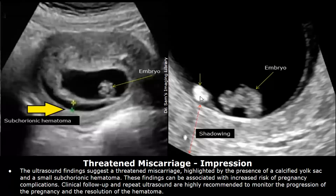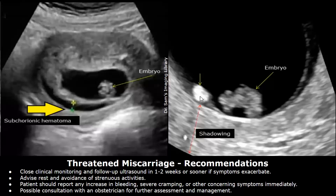This is the impression: the ultrasound findings suggest a threatened miscarriage, highlighted by the presence of a calcified yolk sac and a small subchorionic hematoma. These findings can be associated with increased risk of pregnancy complications; clinical follow-up and repeat ultrasound are highly recommended to monitor the progression of the pregnancy and the resolution of the hematoma. Recommendations: close clinical monitoring and follow-up ultrasound in one to two weeks or sooner if symptoms exacerbate; advise rest and avoidance of strenuous activities; patient should report any increase in bleeding, severe cramping, or other concerning symptoms immediately; possible consultation with an obstetrician for further assessment and management.